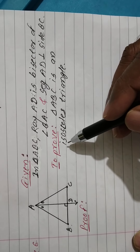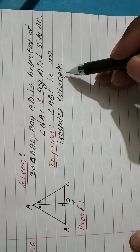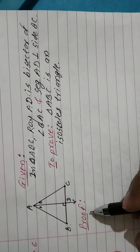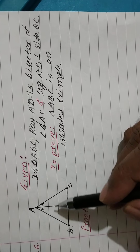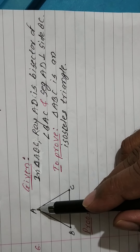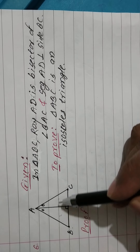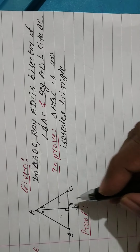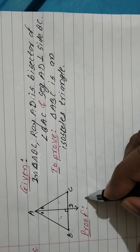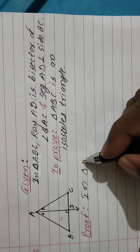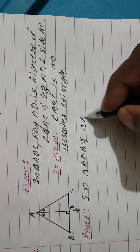To prove: triangle ABC is an isosceles triangle. Proof: in the figure, ray AD bisects the triangle into two parts — two triangles: triangle ADB and triangle ADC. Therefore, I write: in triangle ADB and triangle ADC.